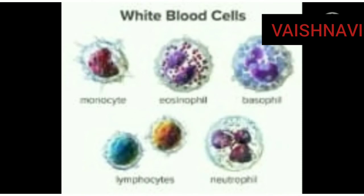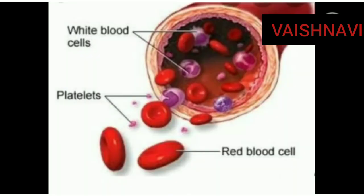WBC is divided into two types: granulocytes and agranulocytes. Granulocytes are divided into three types: neutrophils, basophils, and eosinophils. Agranulocytes are divided into two types: lymphocytes and monocytes. Third one is platelets — blood cells which help in blood clotting at the site of injury. They are known as blood platelets. This is the information about connective tissue.